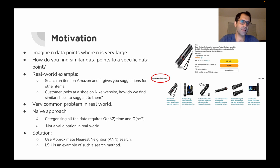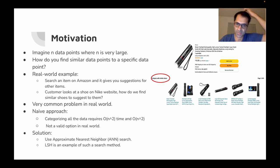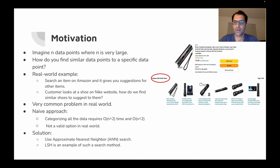Is it the case that they naively compare this item with every single item that they have, or what's the basic method that they use to provide similar items so fast? As another example, imagine you're shopping for shoes on the Nike website and the website is suggesting similar shoes to you. We want to see how this is done — this is a very common problem in the real world.